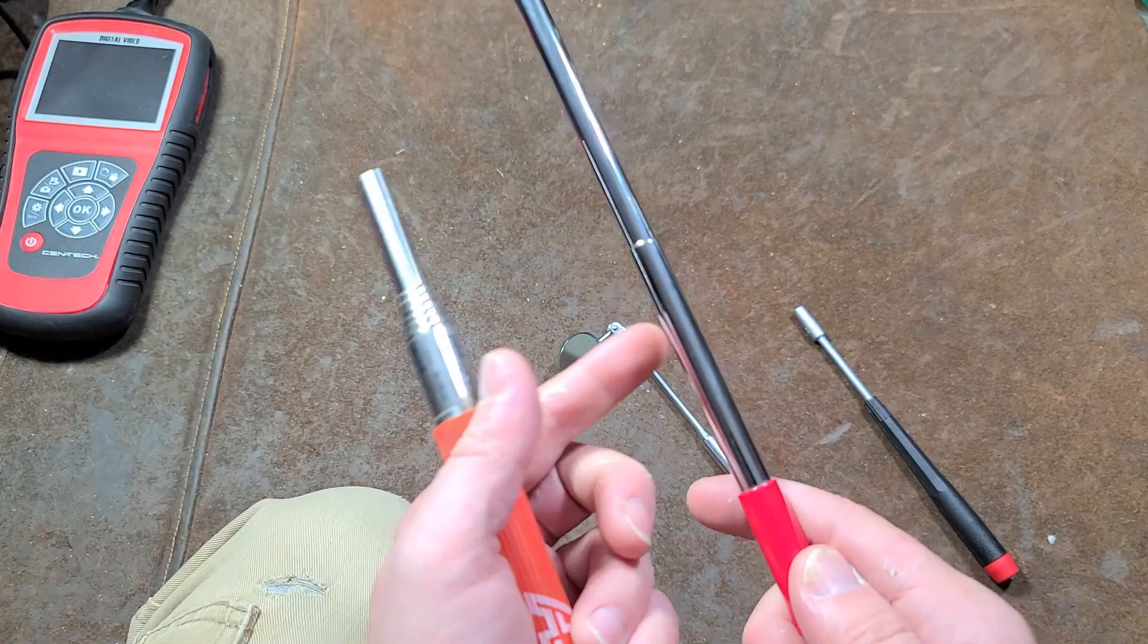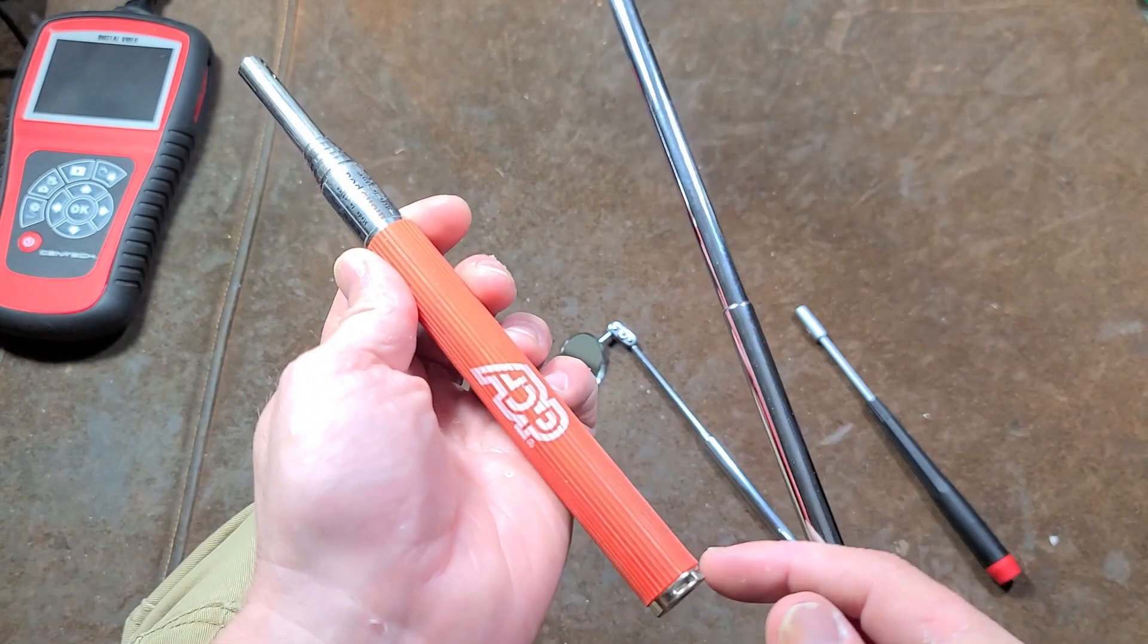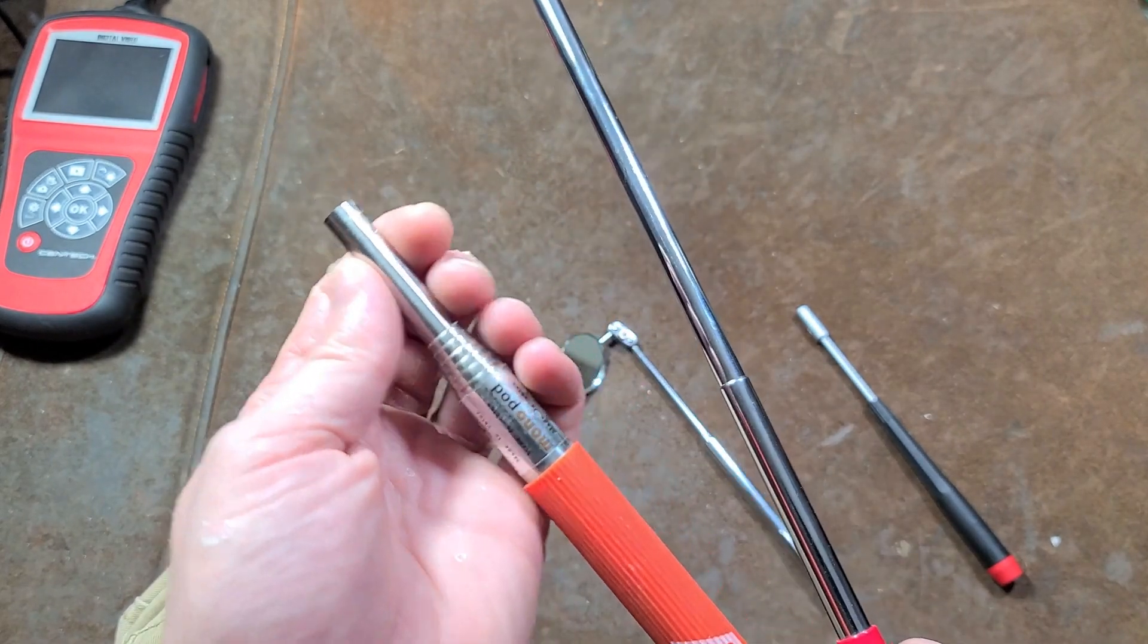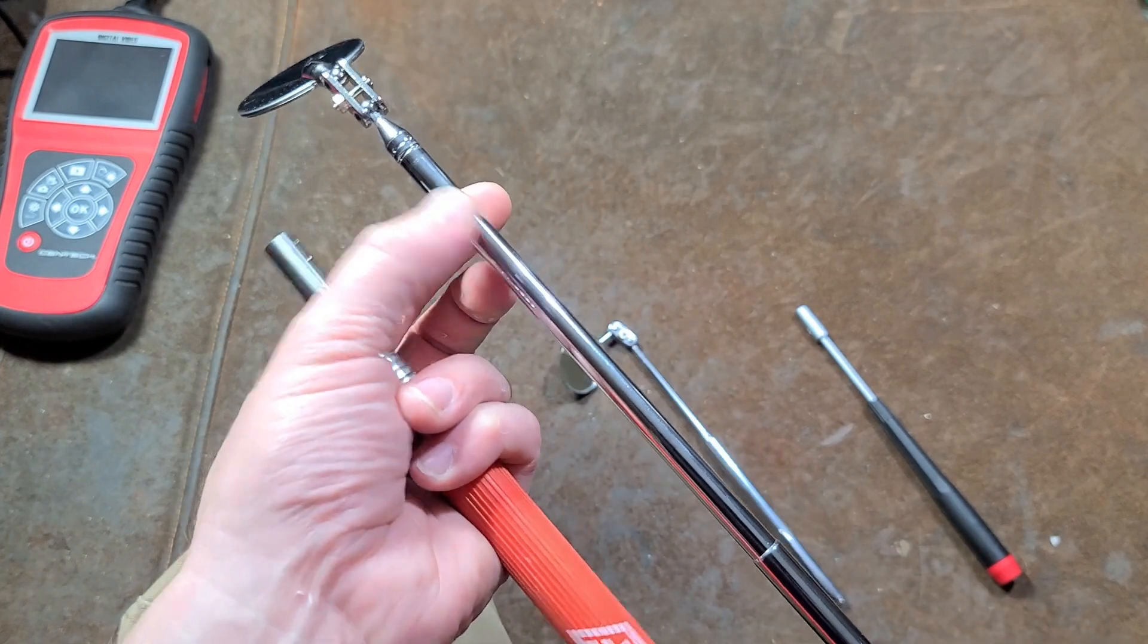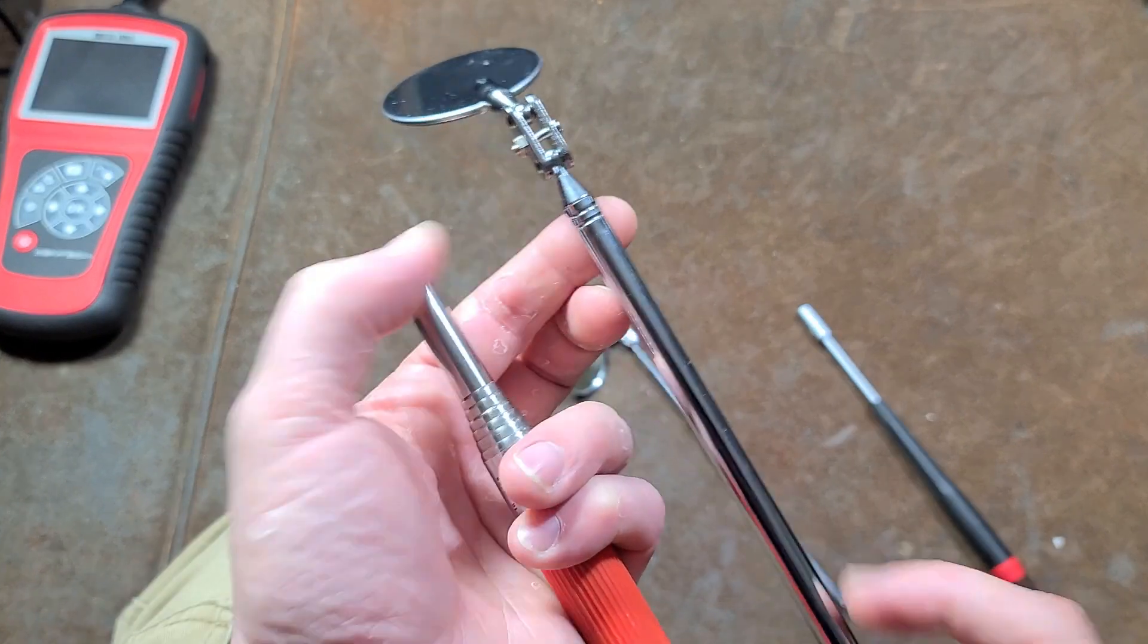What I did find out is that the outside diameter of this lower tube is the same as these cheesy telescoping selfie sticks. So what you can do is you can just cut off this upper tube and actually slip this into the end of the selfie stick and then restake it.